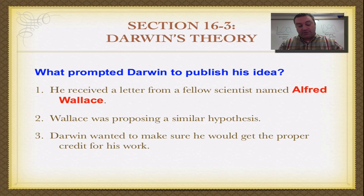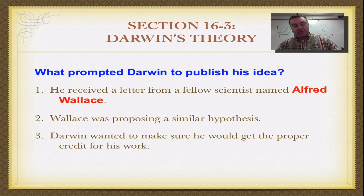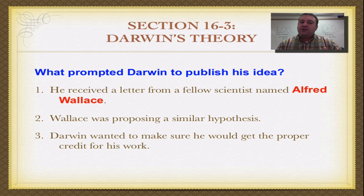That told Charles he better get moving. If he wanted credit for this great scientific theory, he needed to present all of his work. He got to work and finished his book, which would be called The Origin of Species. He and Alfred Wallace actually presented their theory together at a science conference, but because Charles was more articulate in explaining it and had 20 years of data to support the idea, Charles got all the credit, and poor Alfred is more or less a footnote in history.